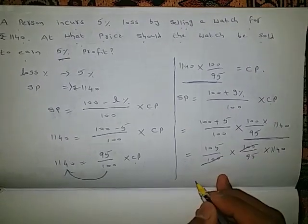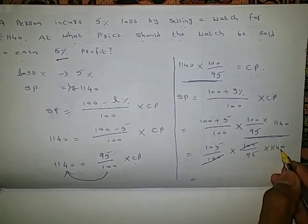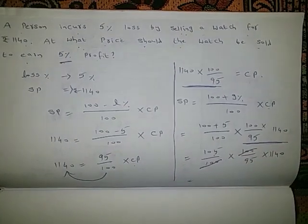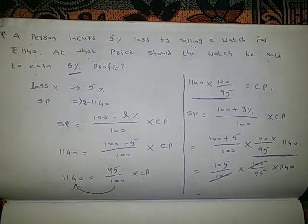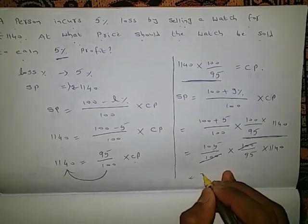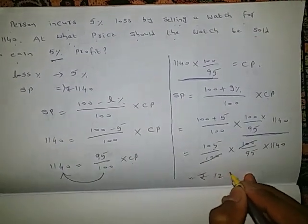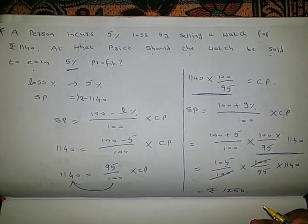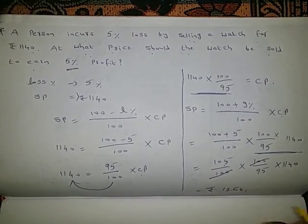Here, 100 and 100 cancel. So 105 into 1140, whole divided by 95, is 1260 rupees. Please subscribe to my channel. Thank you everyone.